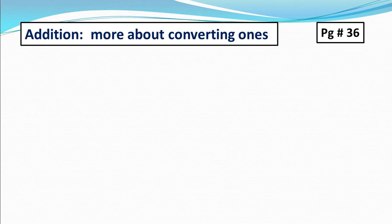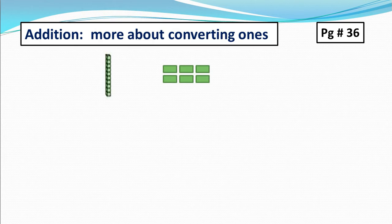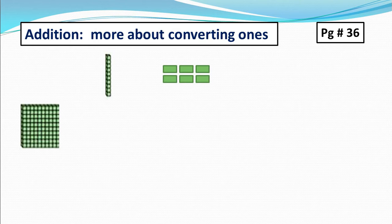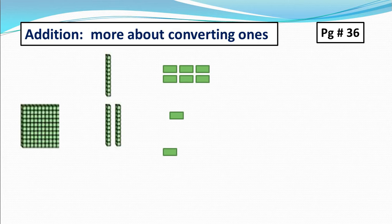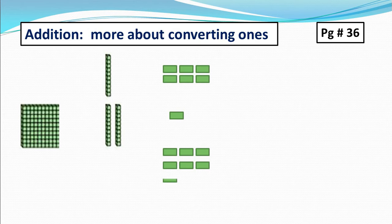Look, there is one stack of 10 and 1, 2, 3, 4, 5, 6 — 6 ones. Then there is one box of 100, and 1, 2 stacks of 10, and 1 one. Then there are 1, 2, 3, 4, 5, 6, 7, 8, 9 — 9 ones. Now add them.